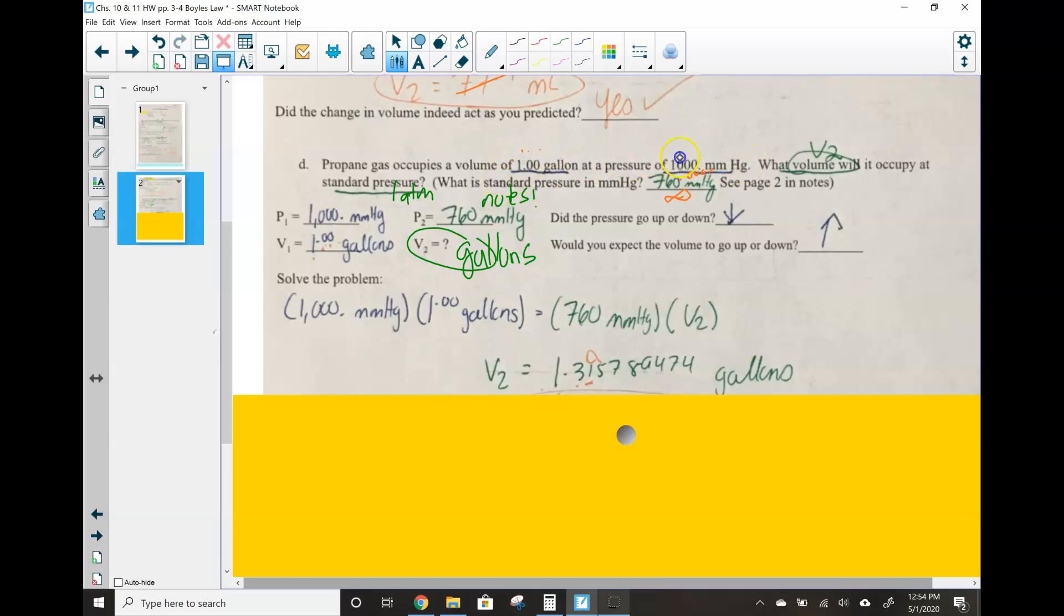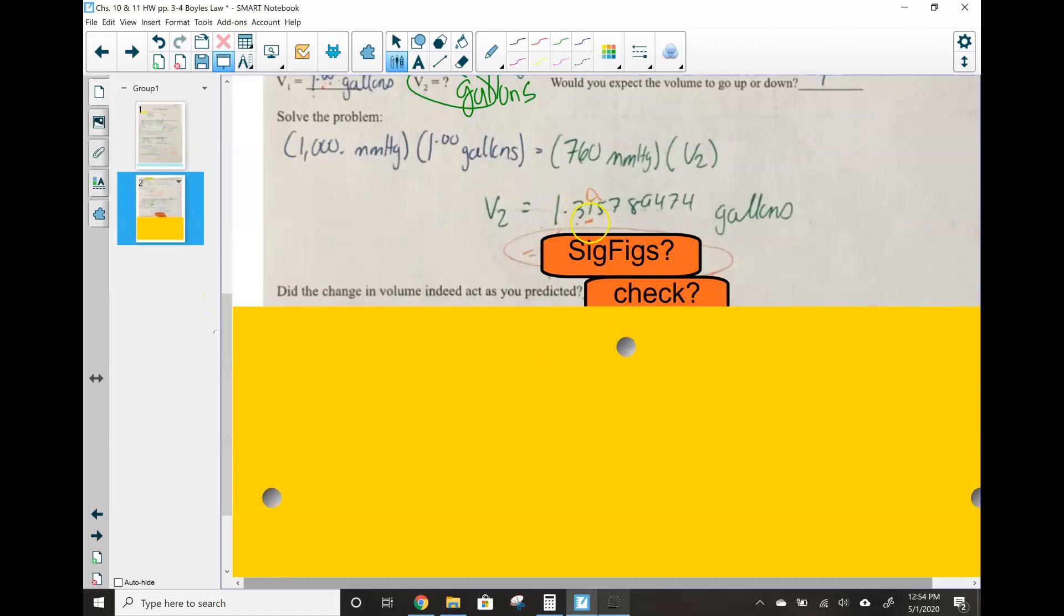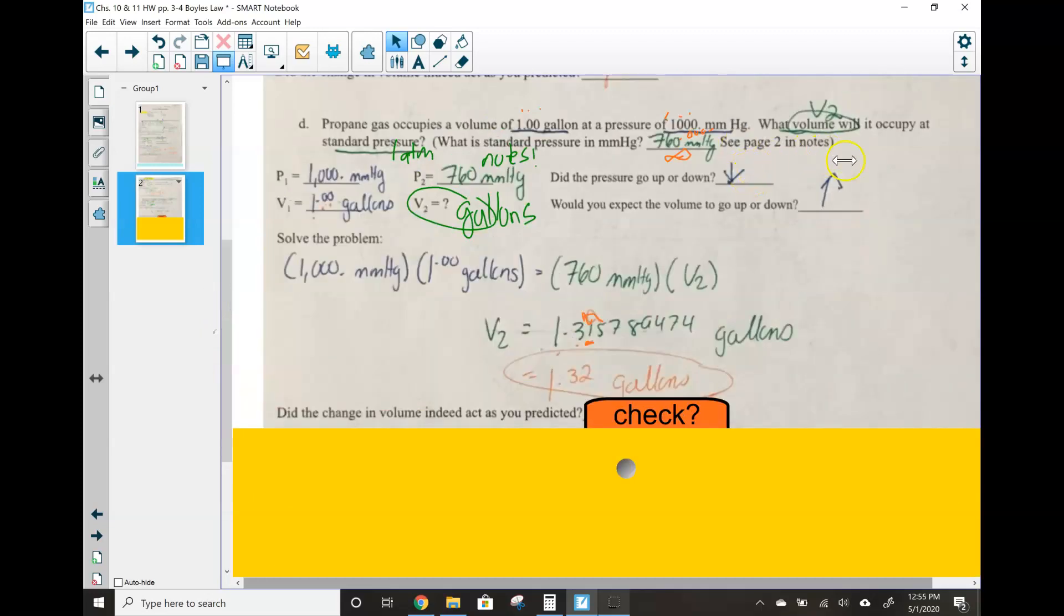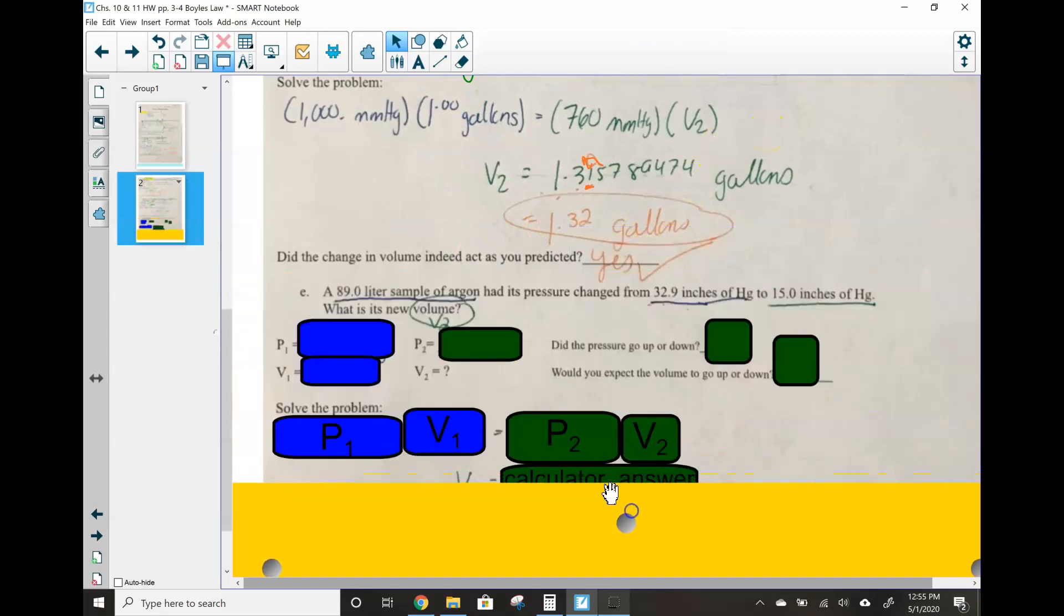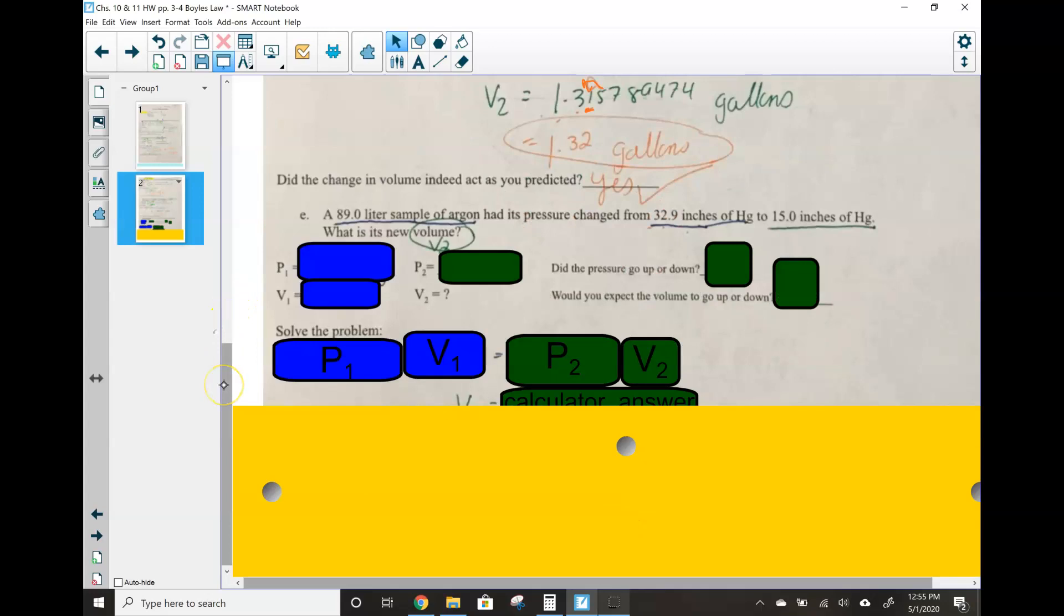So 1, 2, 3, look to the right. What will the 5 do to the 1? We'll round it up. It'll be 1.32 gallons. Now for our check. We said pressure went down. Volume should go up. Volume was initially 1, and now it's 1.32. Did it go up? Yes, I'm good. Last problem.